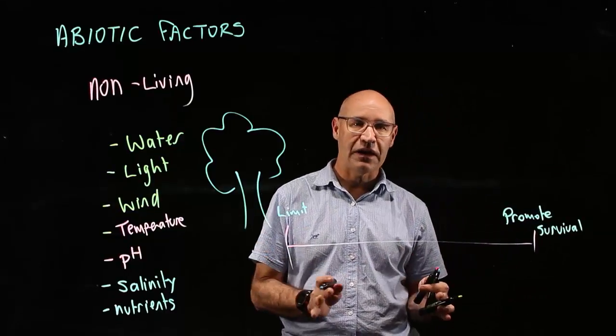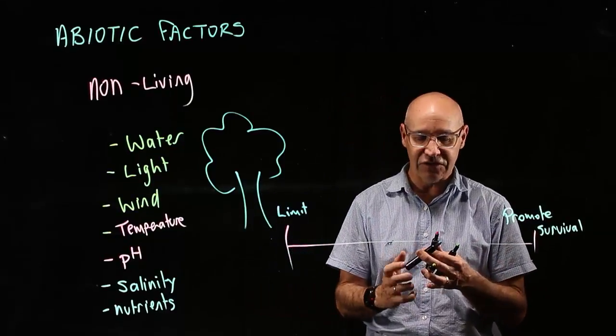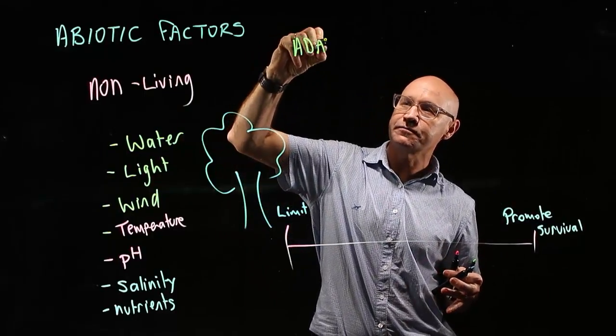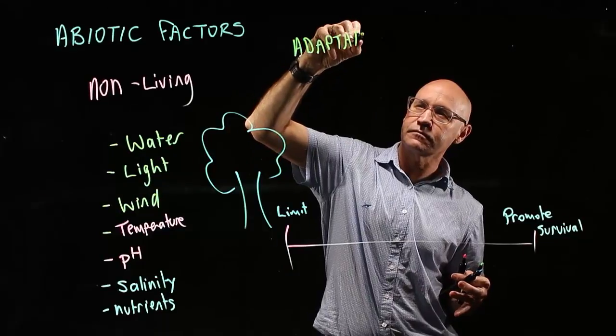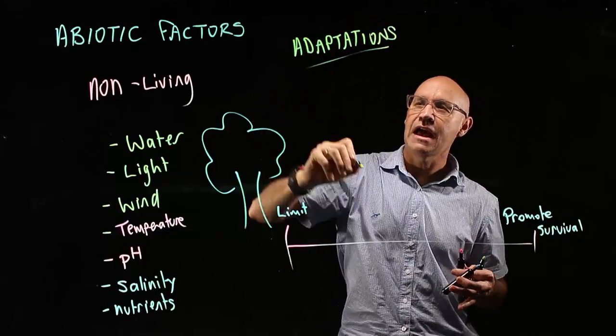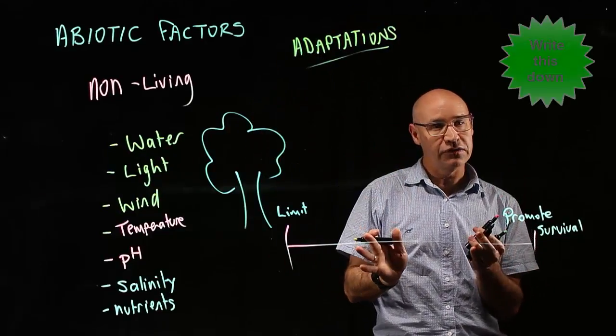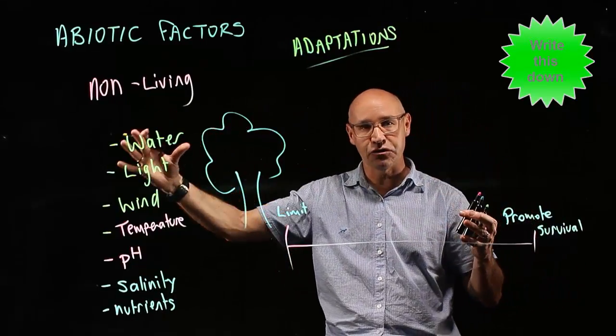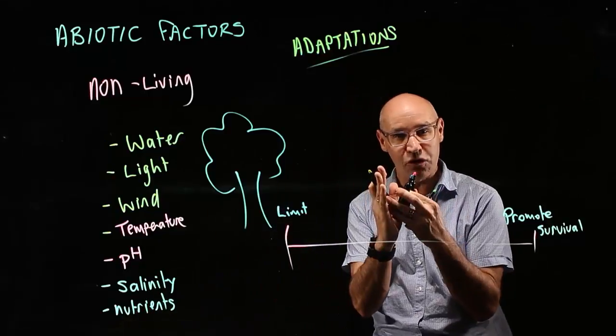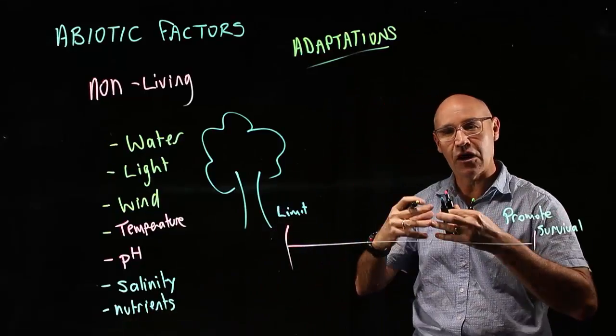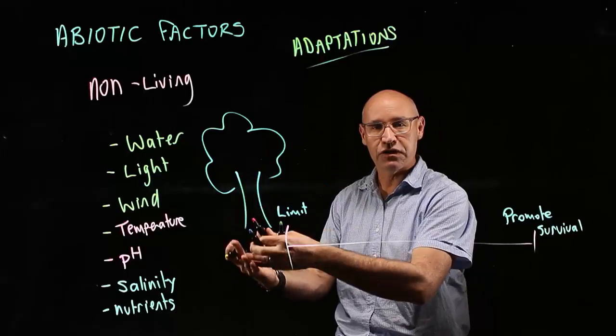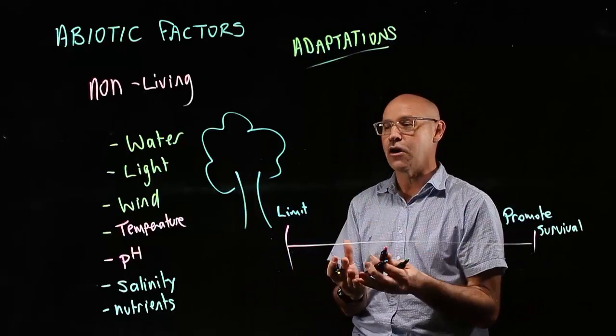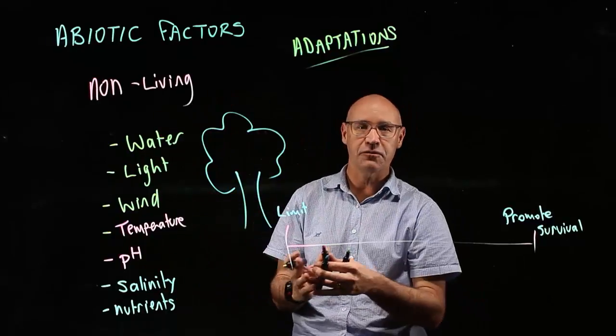What organisms have is that they have these things called adaptations. Adaptations are changes that occur to a species over evolutionary time - not one organism, but the whole species over time changes to be better suited to the environment or the abiotic factors in which it lives.